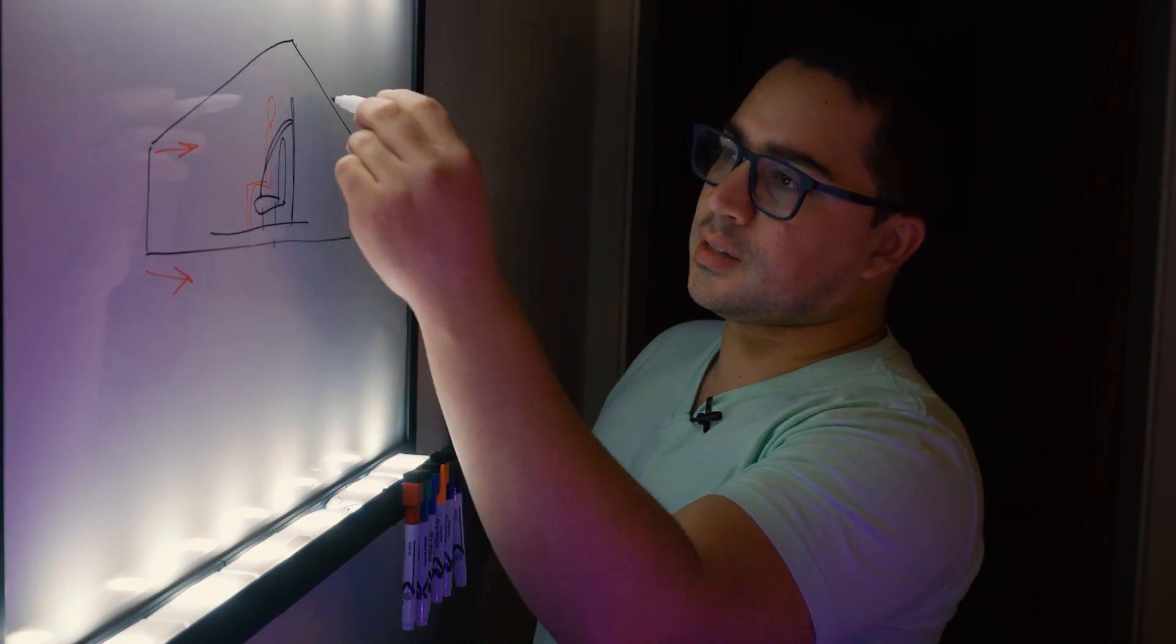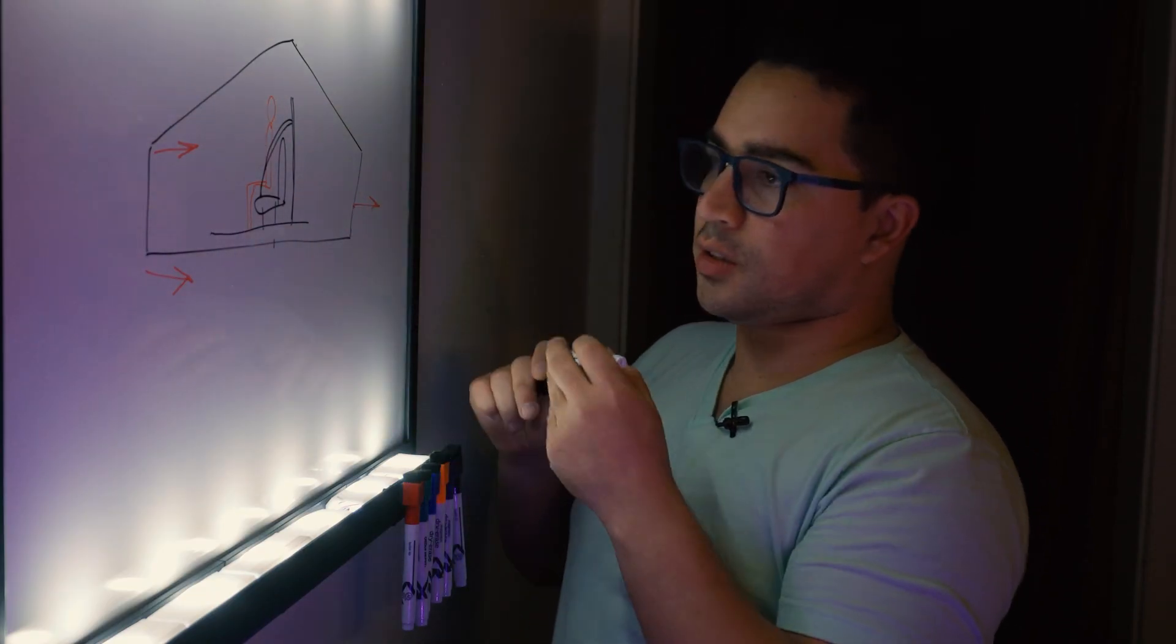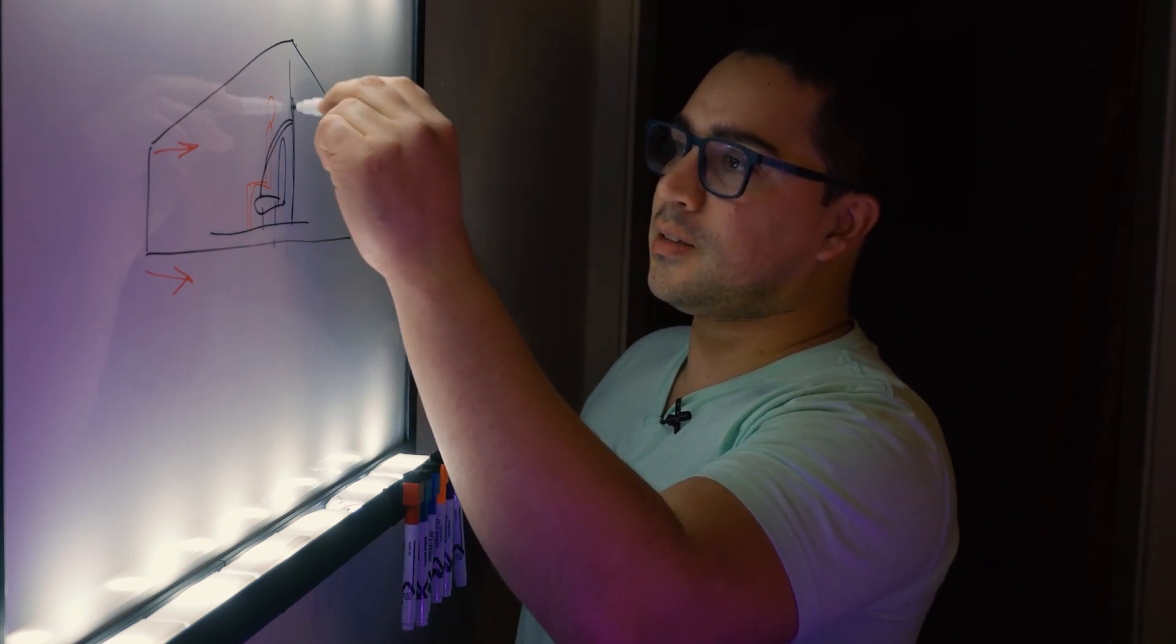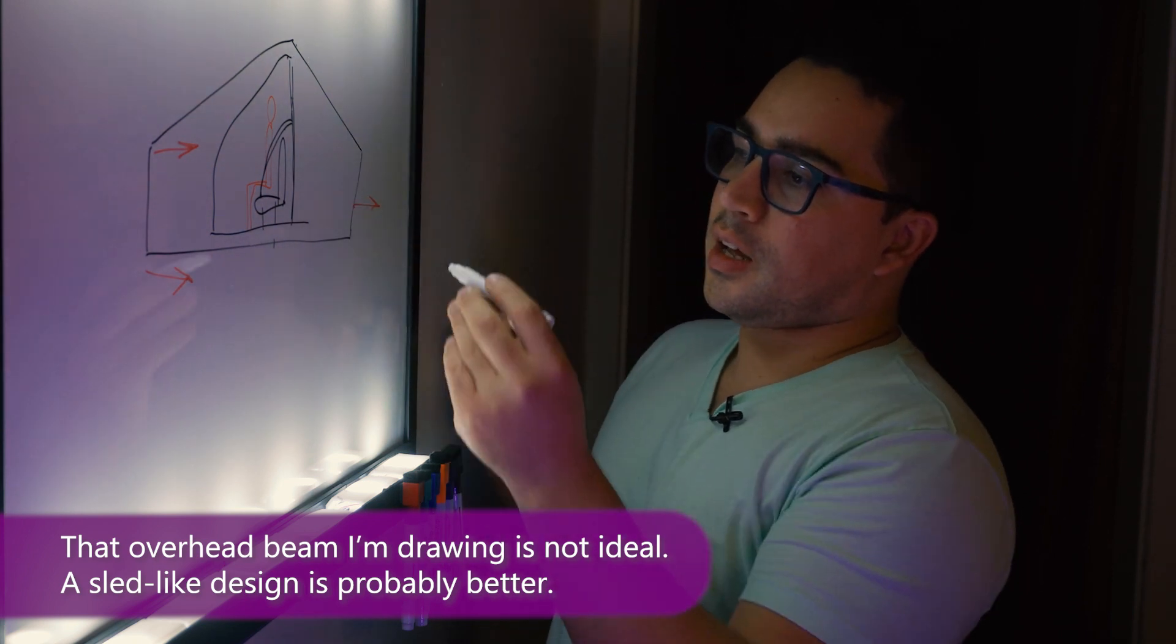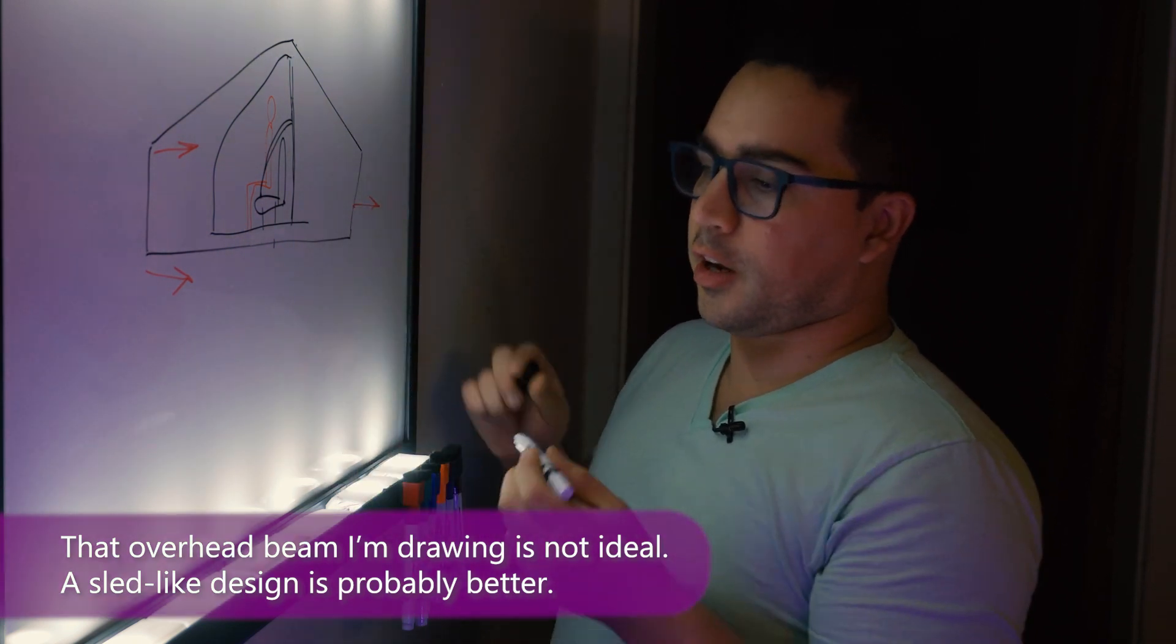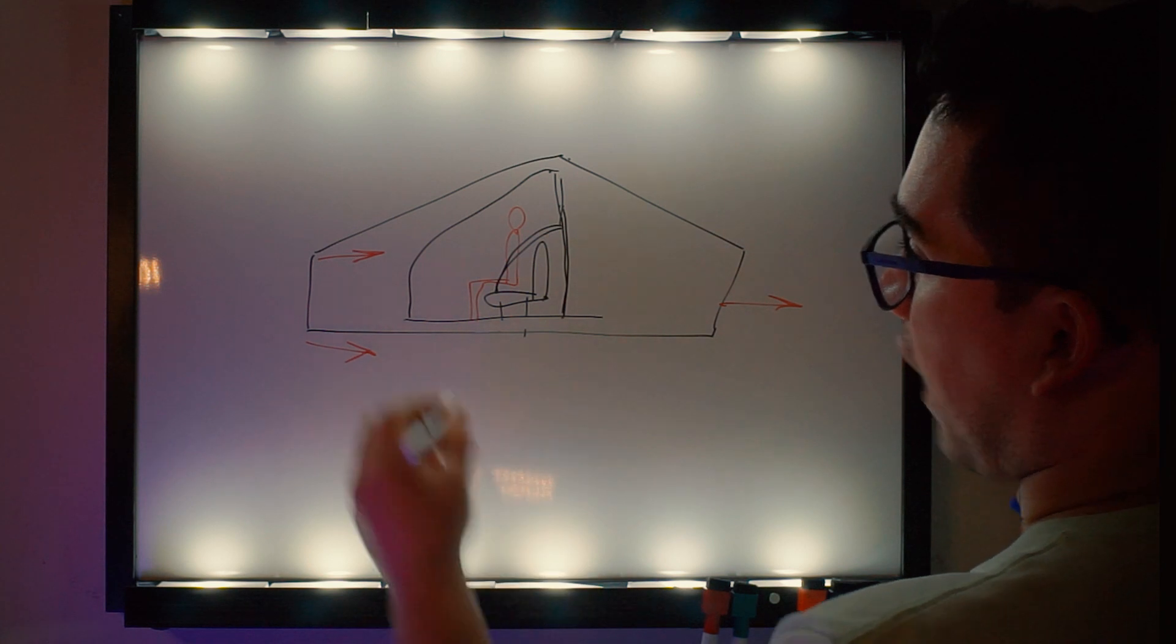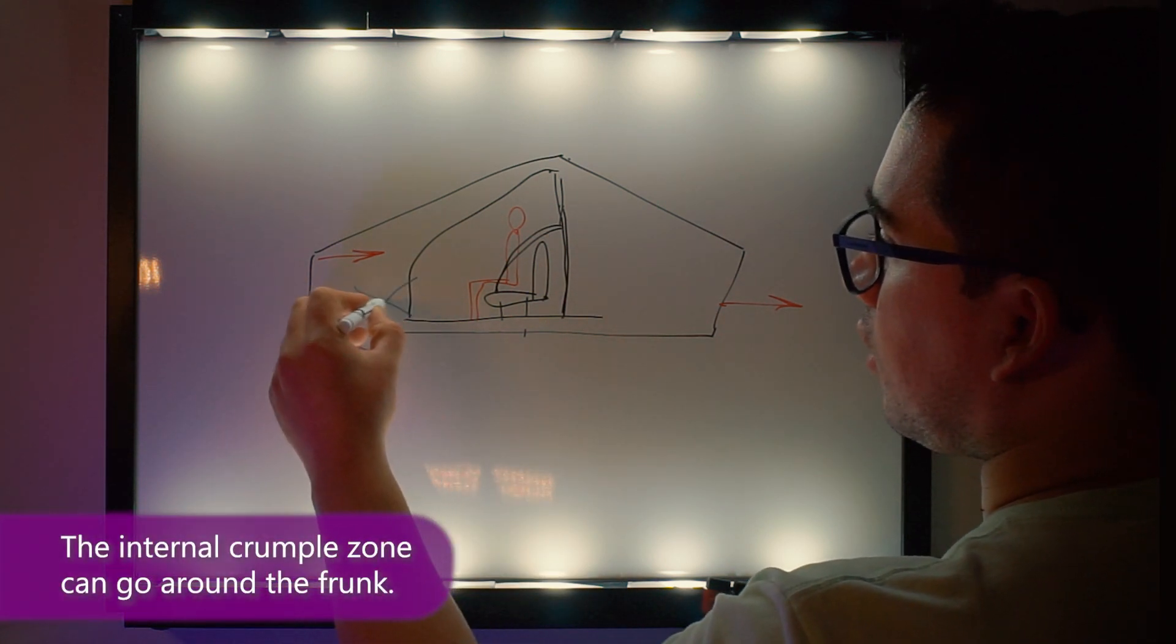This piece, let's say this is the cabin, can move at a different speed than the rest of the body. And then we can actually add our crumple zone, and that could be here.